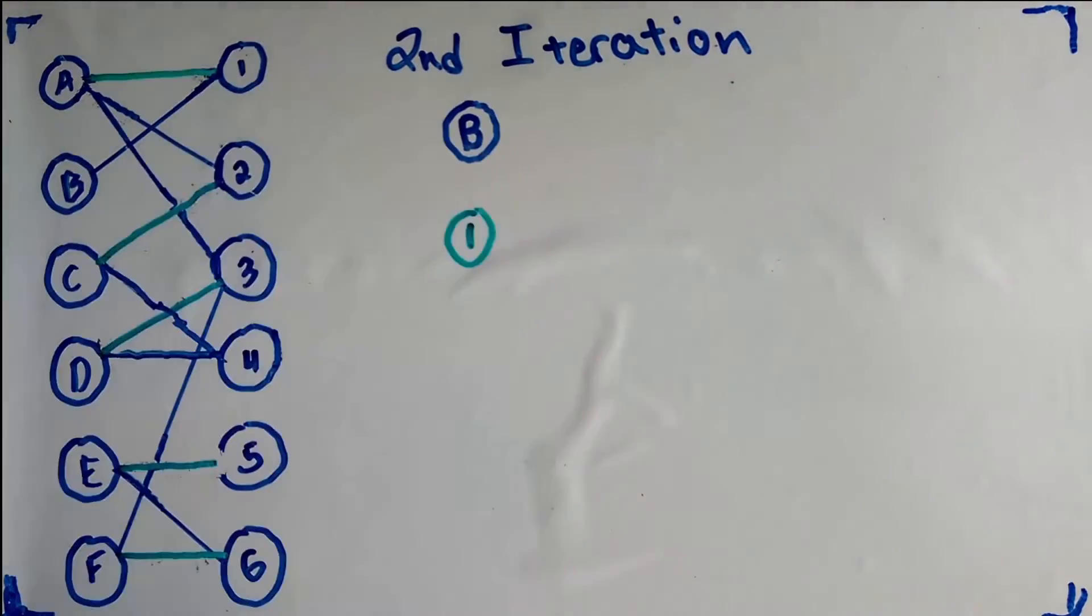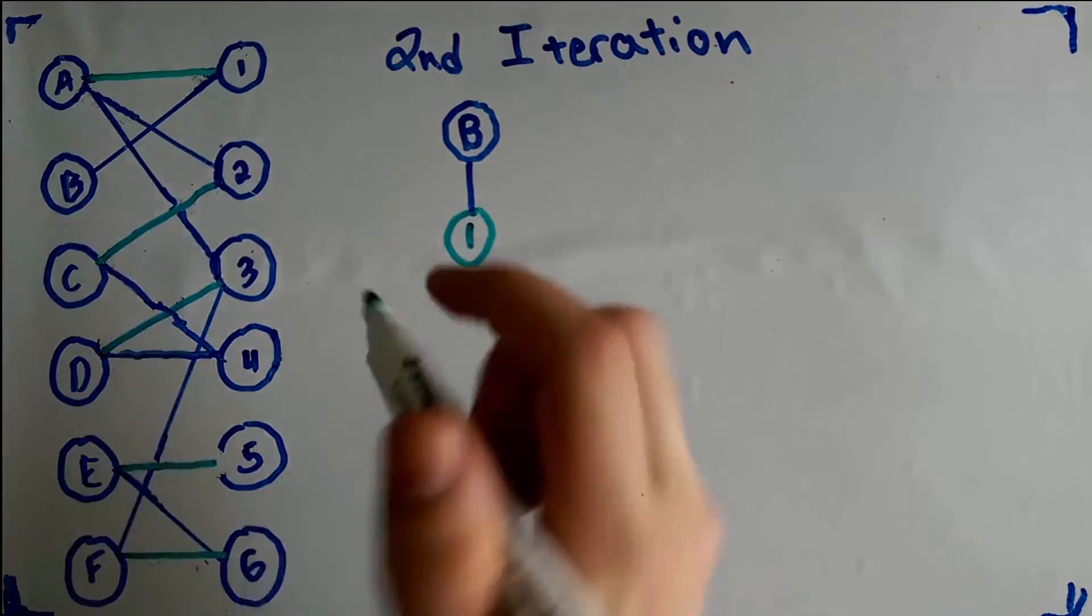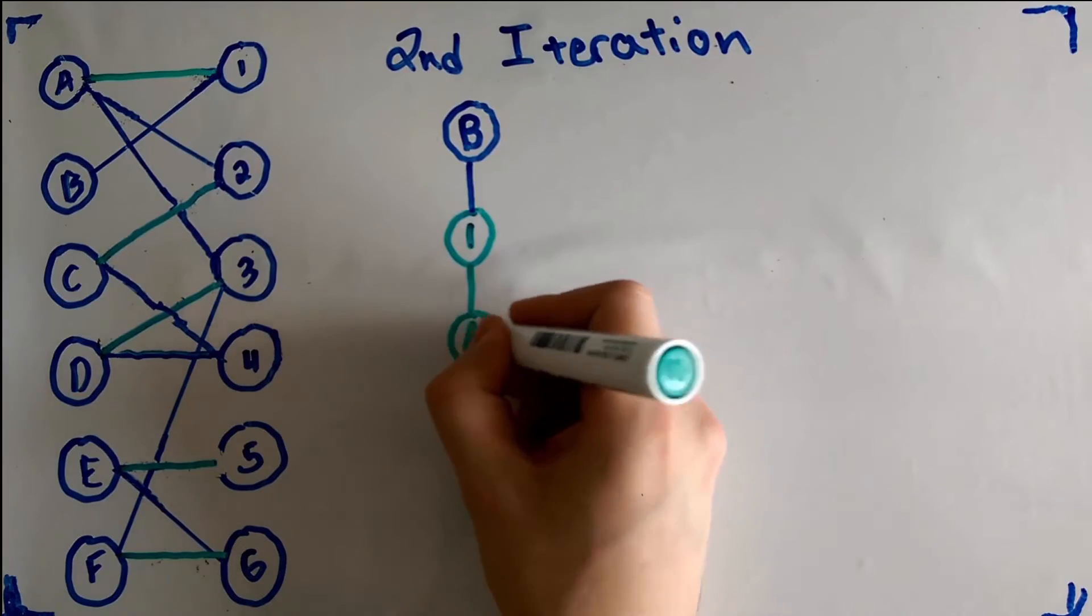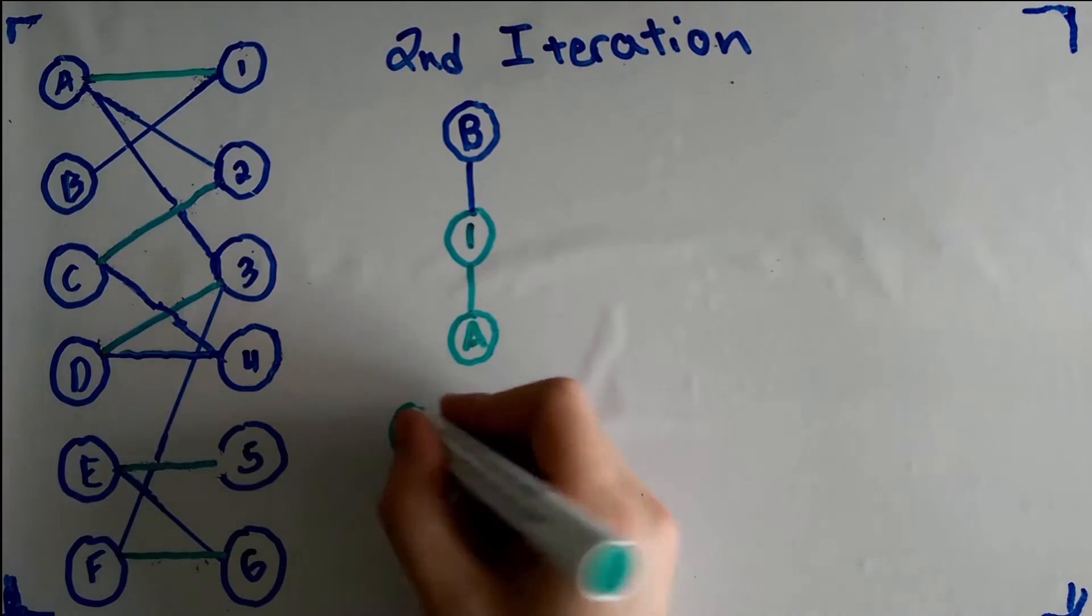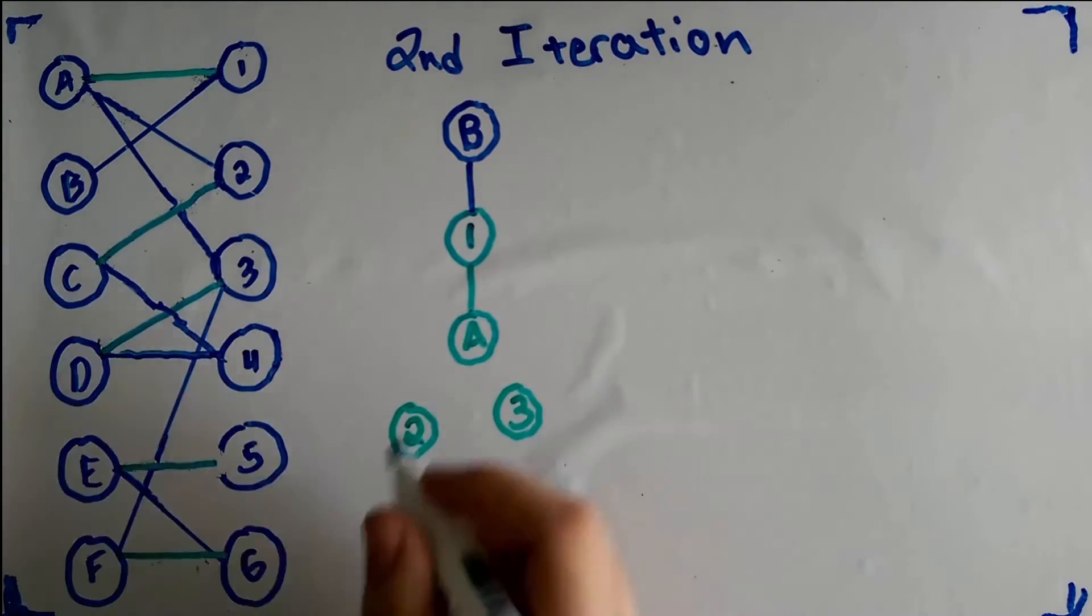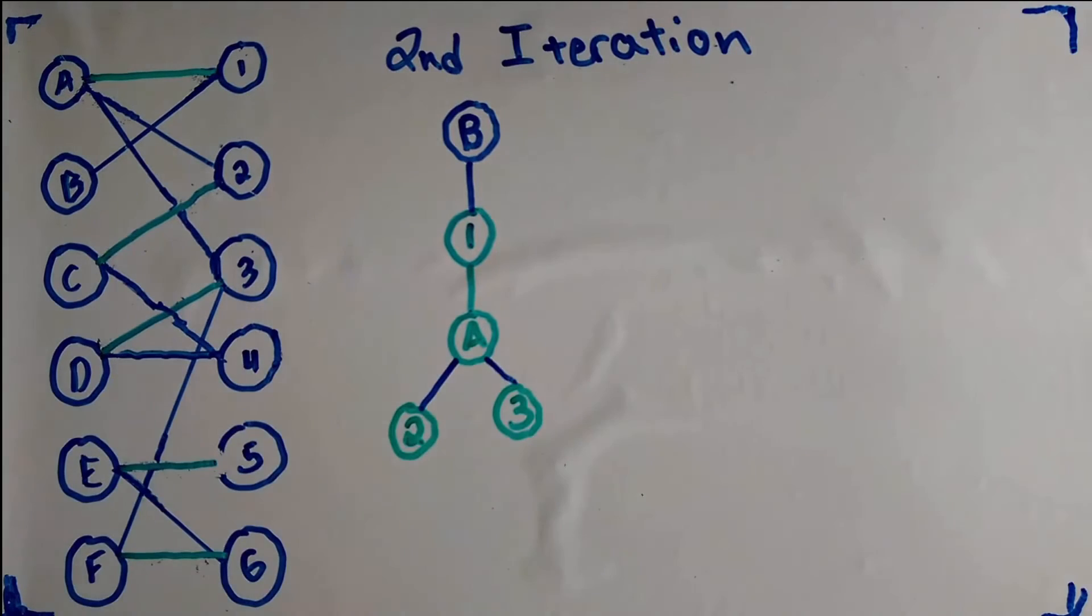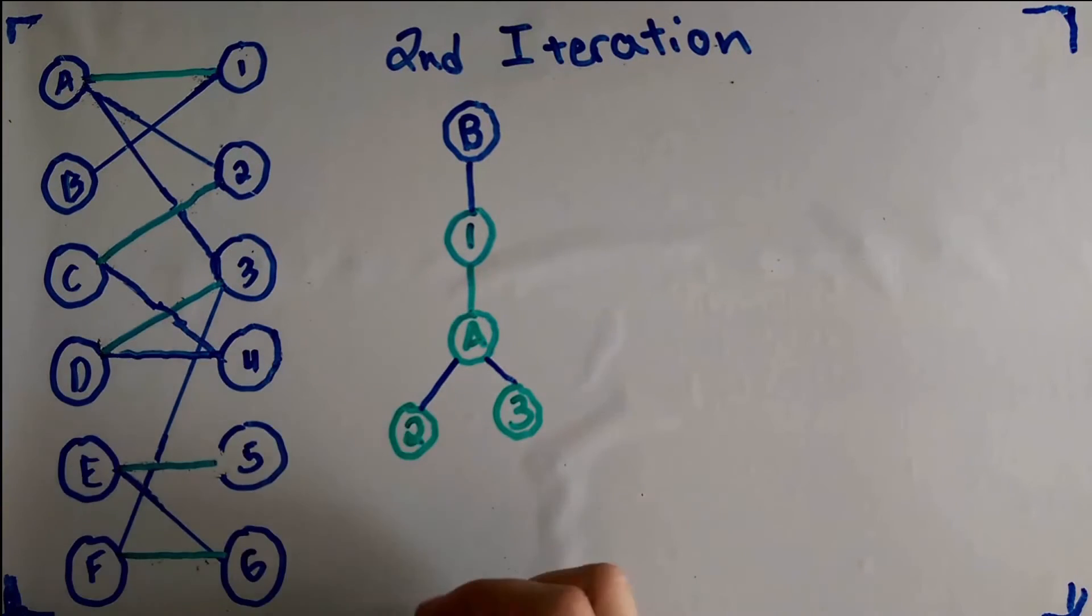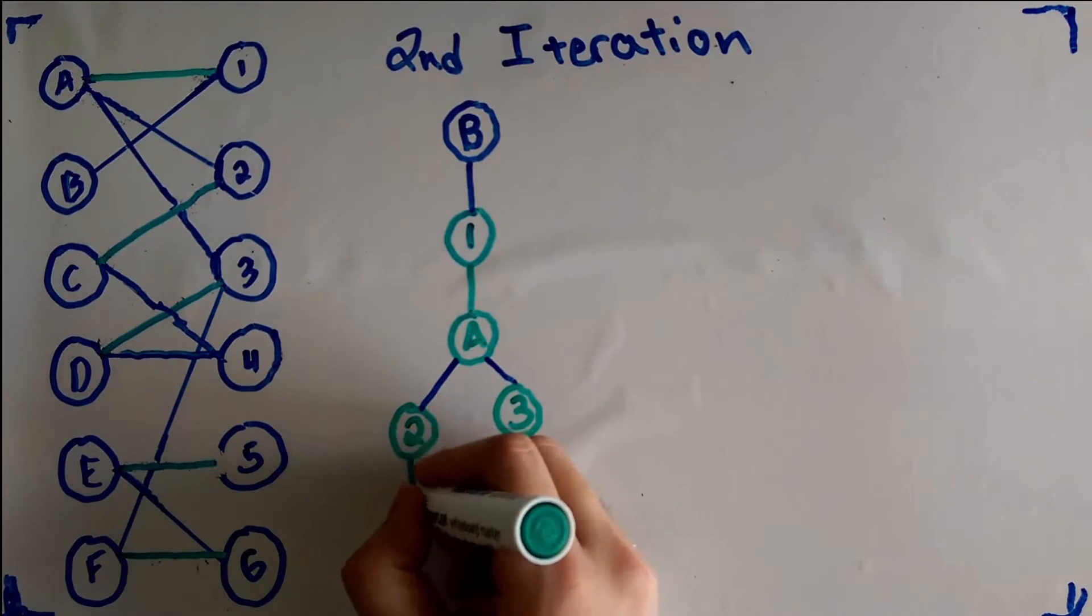For the second iteration of the algorithm, we begin by selecting the only unmatched vertex in the left set, B, and create a tree by going from the left set to the right using only unmatched edges and from right to left using only matched edges until we reach to a level that contains a free vertex.